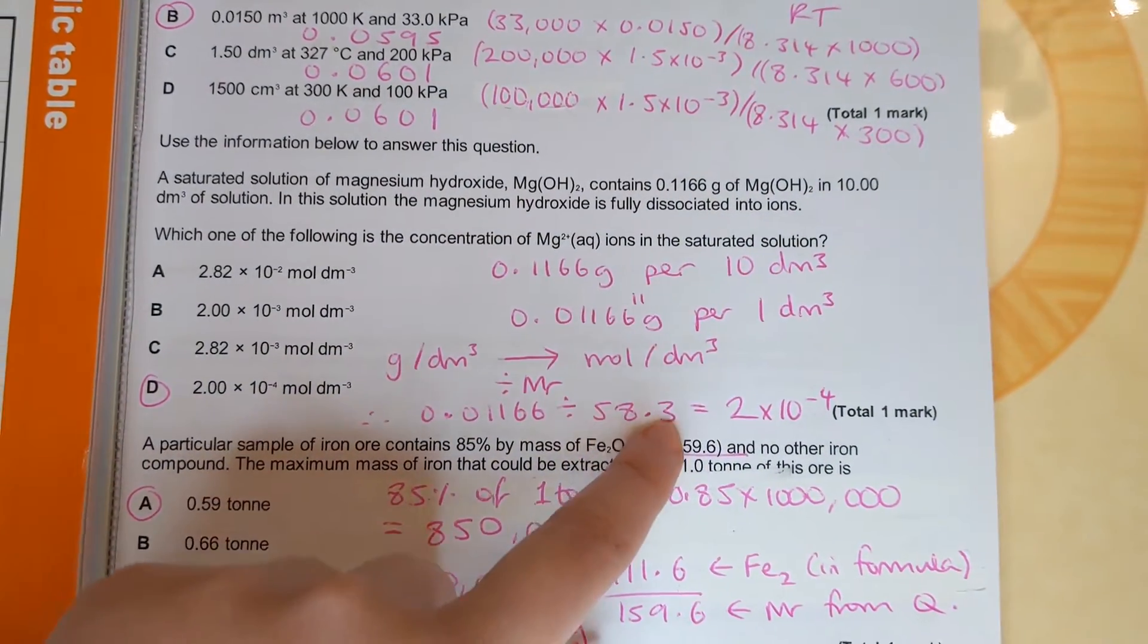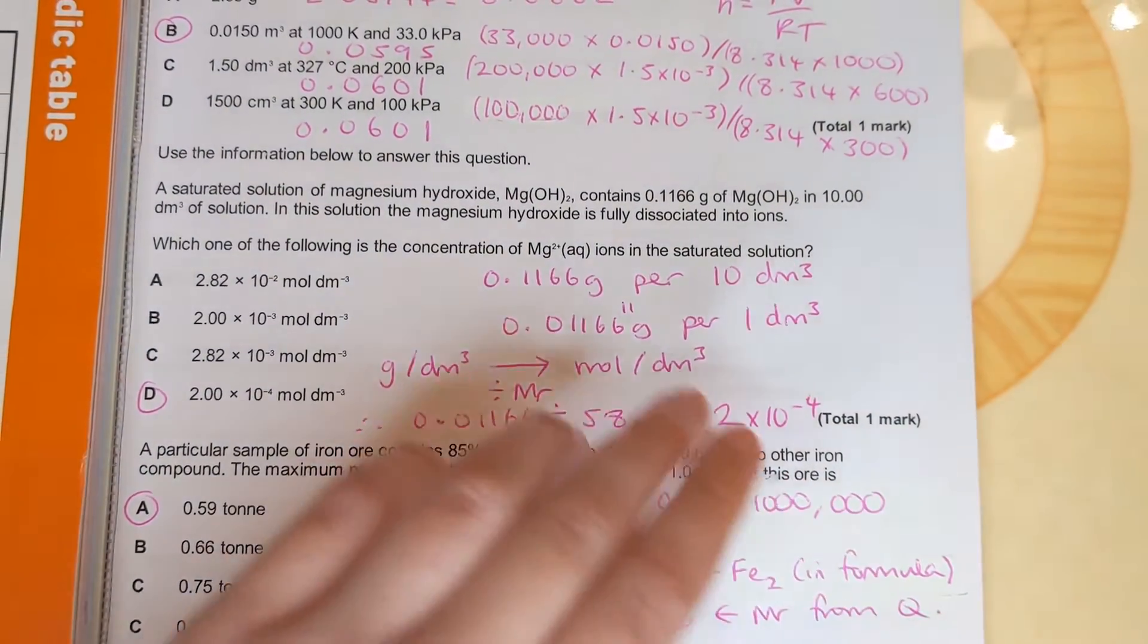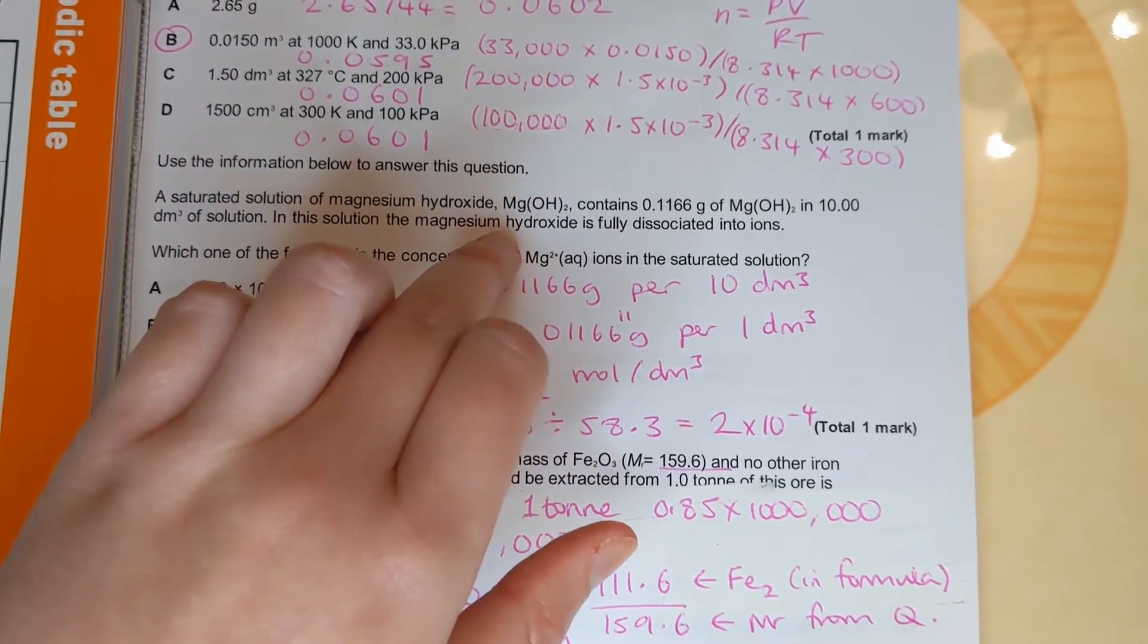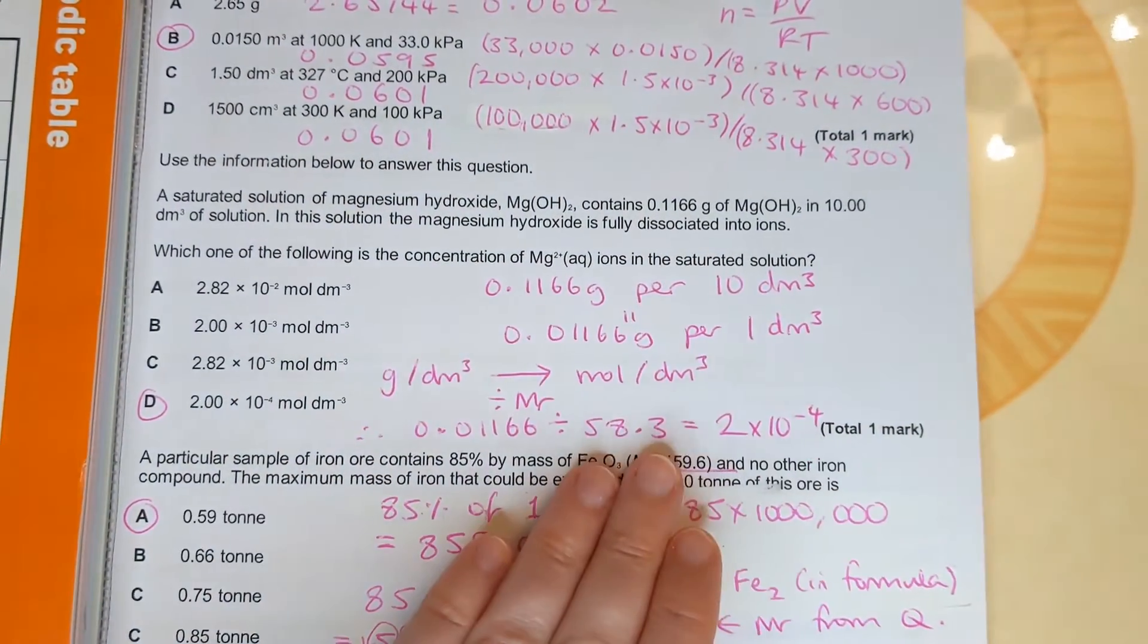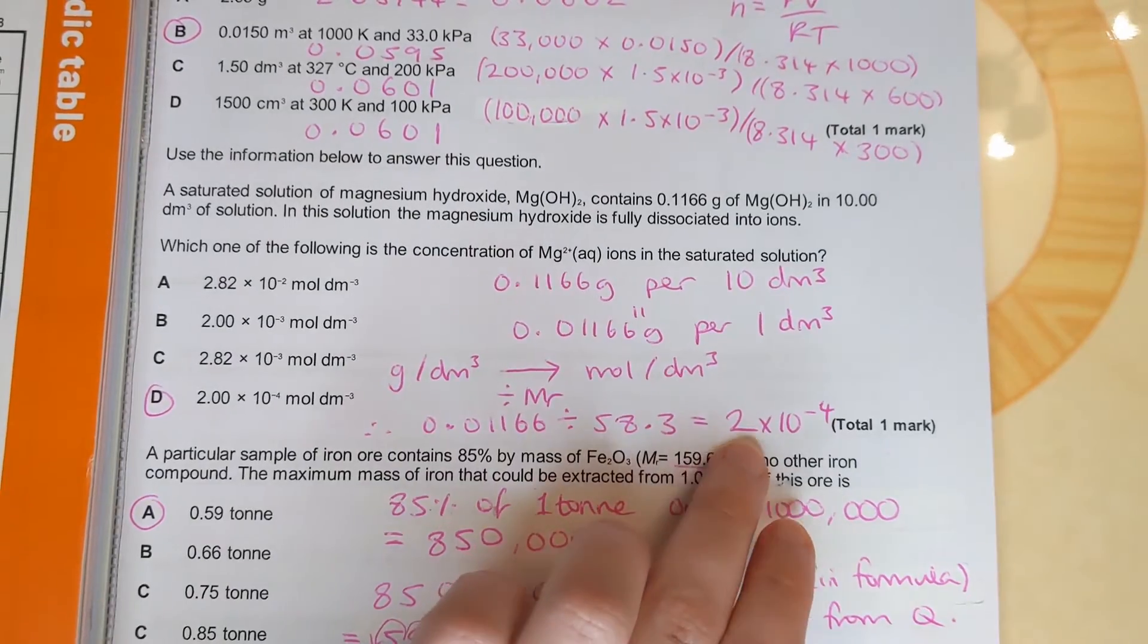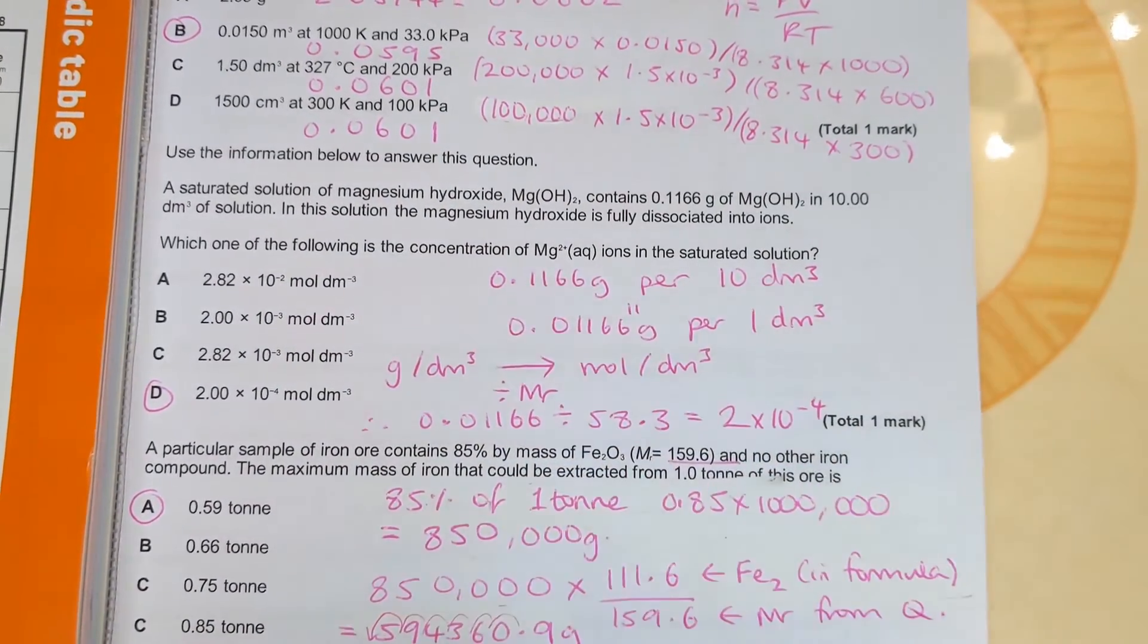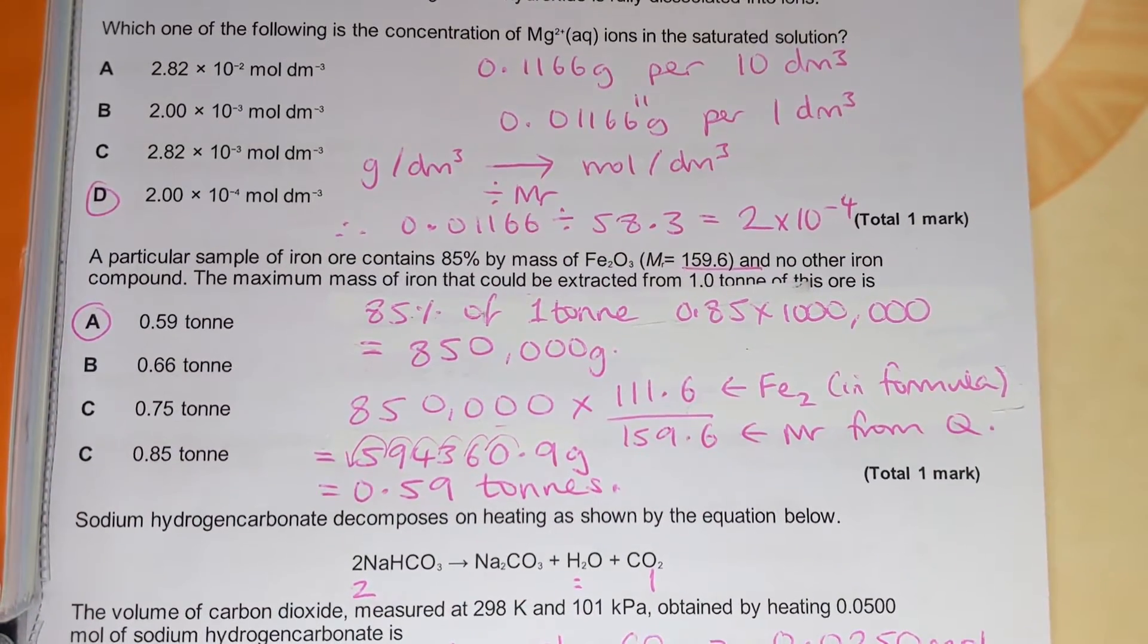And there's only one lot of magnesium in this formula unit, one lot of magnesium, two lots of hydroxide, so we leave it like that and the answer comes out with two times ten to the minus four. So the answer to this one is D.